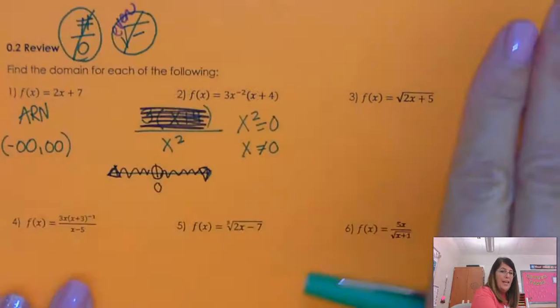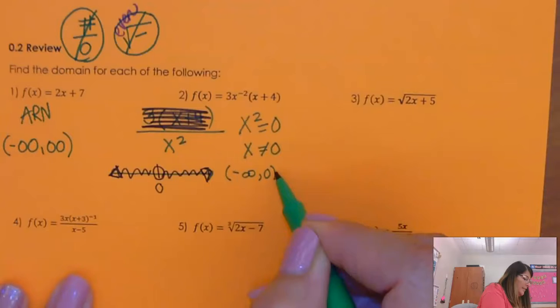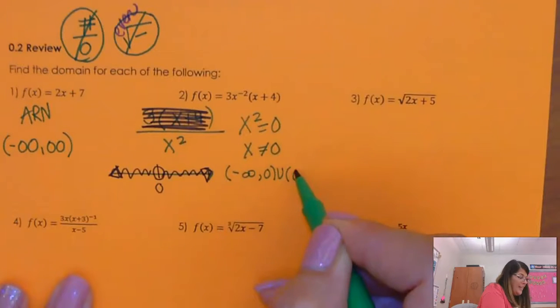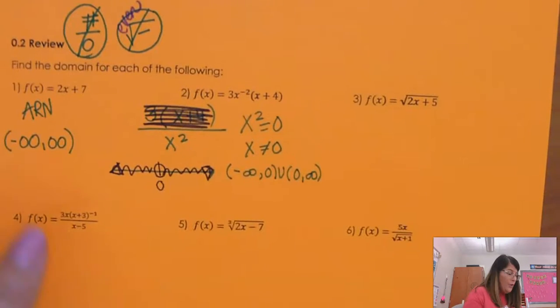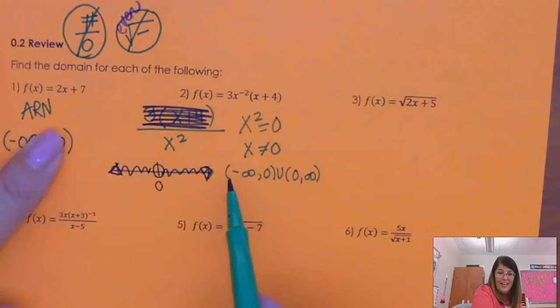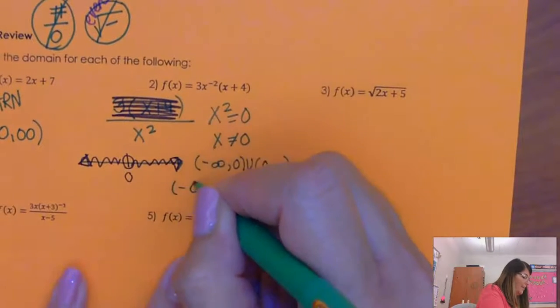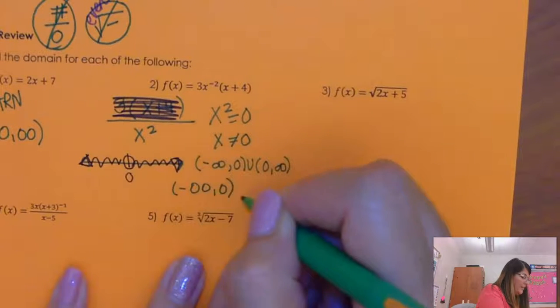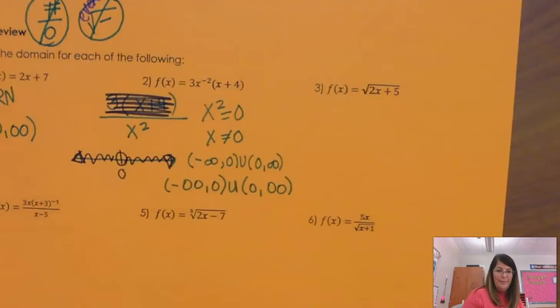So I run my hand across this and I go, all right, this baby starts at negative forever. It goes up to 0. Then it starts again on the other side of 0 and goes forever. So it is not including 0. That's why this is a soft bracket, a parenthesis. And infinities, negative or positive infinity, always have a soft bracket. So I would write negative infinity, 0, then a little union, 0, infinity if I was typing that into the answer.